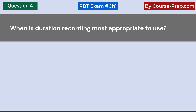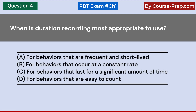When is duration recording most appropriate to use? A. For behaviors that are frequent and short-lived. B. For behaviors that occur at a constant rate. C. For behaviors that last for a significant amount of time. D. For behaviors that are easy to count.